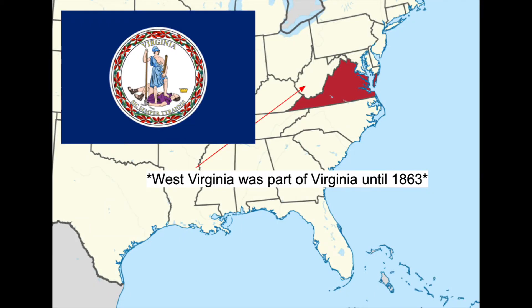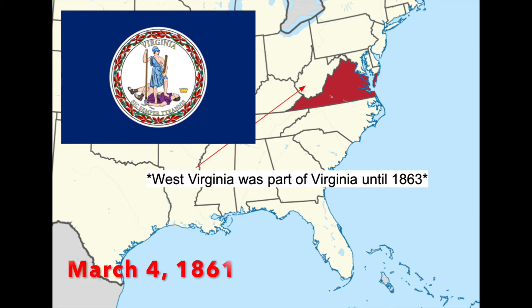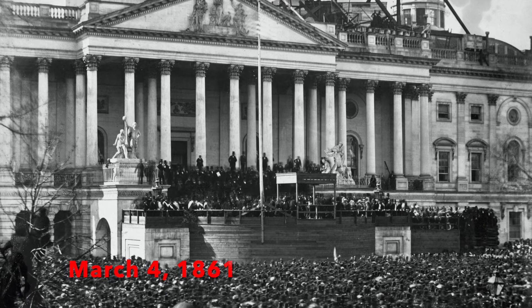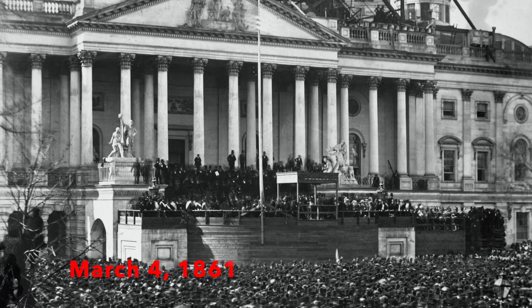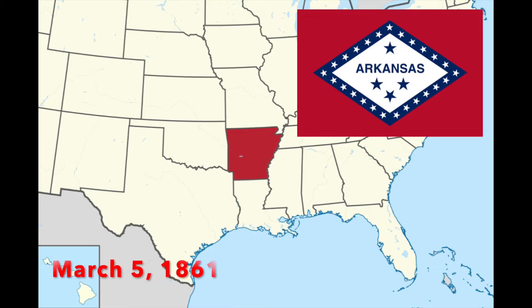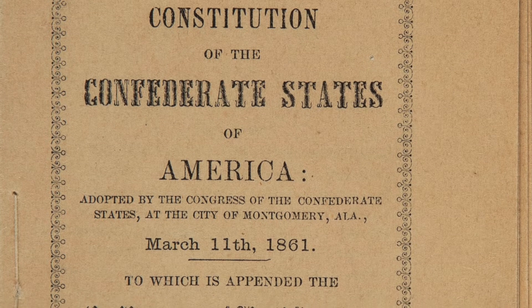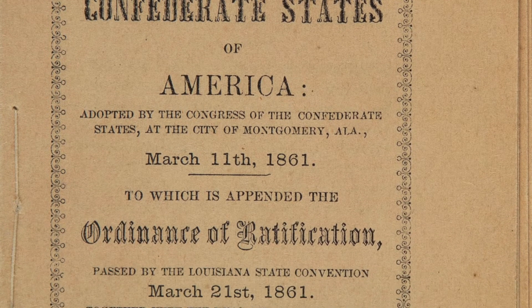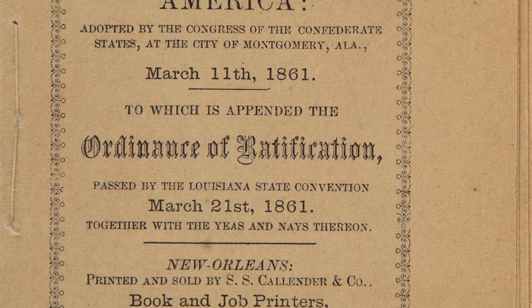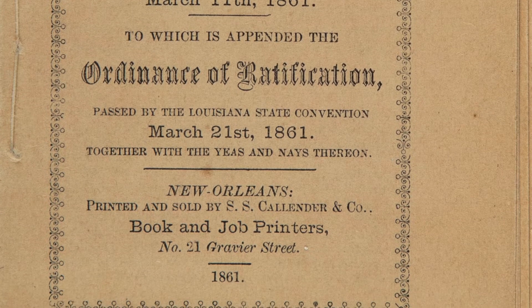On March 4, 1861, three interesting things happened. The Virginia Secession Convention rejected secession by a vote of 89 to 45. President Abraham Lincoln was inaugurated in Washington, D.C. And the Confederacy adopted its first flag with seven stars and three bars. The Arkansas convention also opened in Little Rock. Then, on March 11, 1861, the permanent Confederate Constitution was adopted — they had made a provisional one, but now they had a permanent one with more time to finalize it.